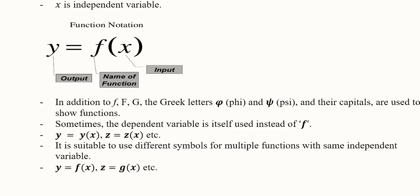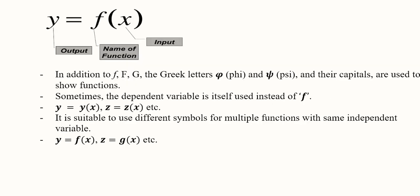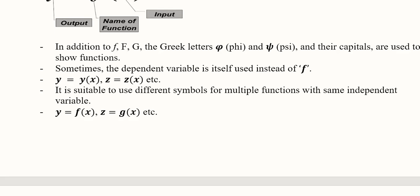Sometimes the dependent variable is itself used instead of f. That is, y=y(x) or z=z(x). Usually we write it with small f. If we have more than one function with the same independent variable - that is, x is determining z and x is also determining y - we can use different symbols: f, g, h, etc.